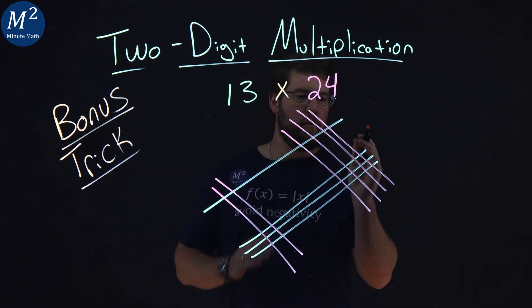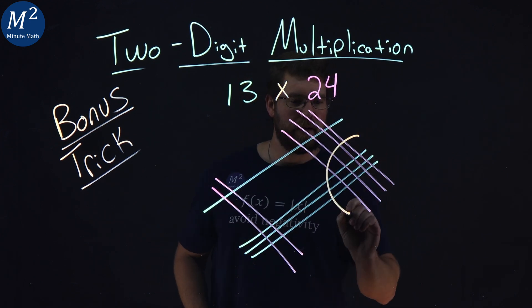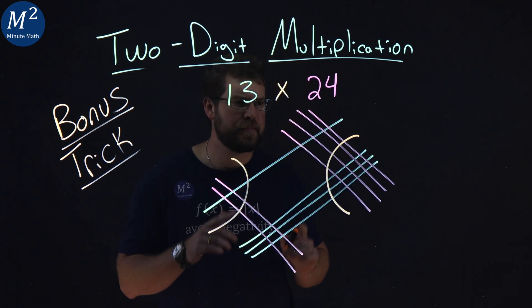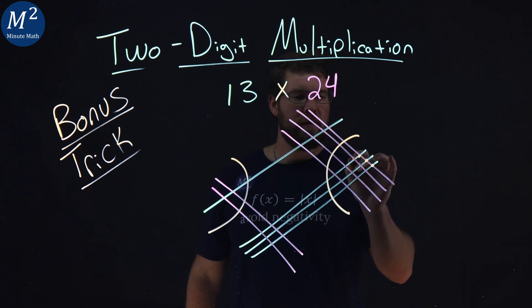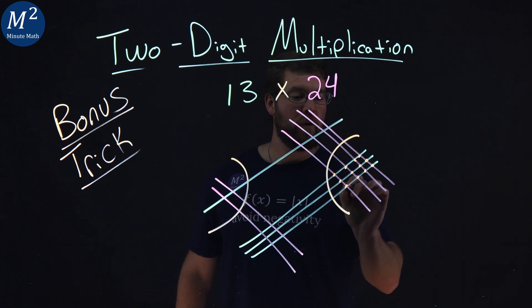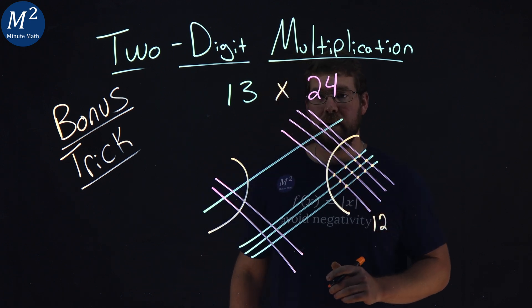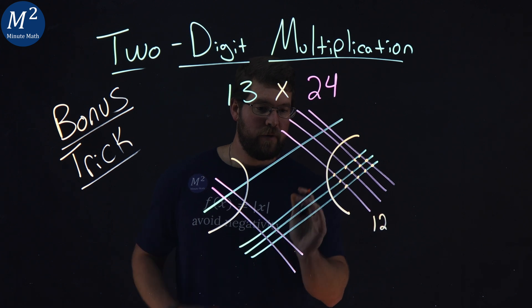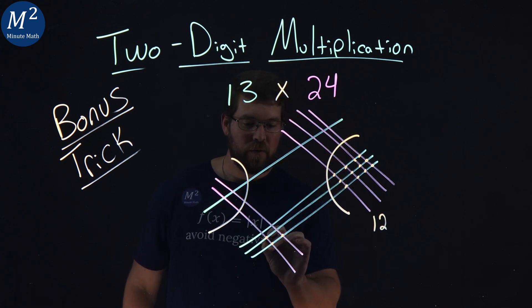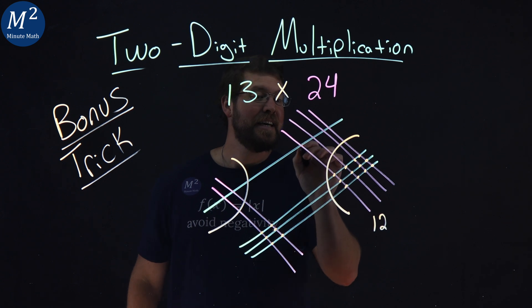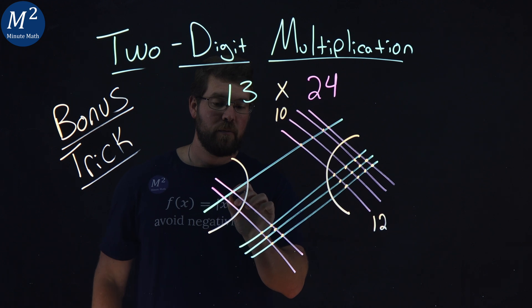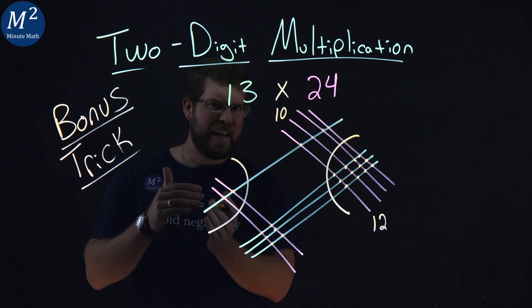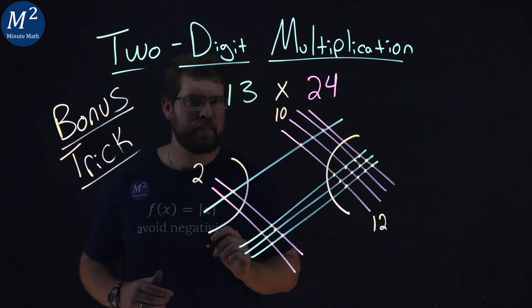Now, I want to group this. We have this right section here, and the left section like this. Let's count some dots here. 1, 2, 3, 4, 5, 6, 7, 8, 9, 10, 11, 12. We got 12 right here. In the middle, we have between these two arcs, 1, 2, 3, 4, 5, 6, 7, 8, 9, 10, right there. And lastly on the left, we have 1, 2, the intersections of these lines.